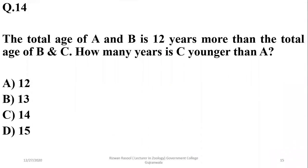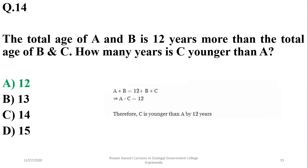Question 13: The total age of A and B is 12 years more than the total age of B and C. How many years is C younger than A? The answer is 12. Setting up the equation: A + B = 12 + B + C, so A − C = 12. So the answer is alpha.